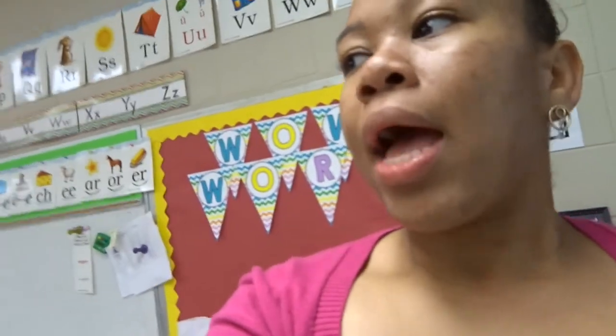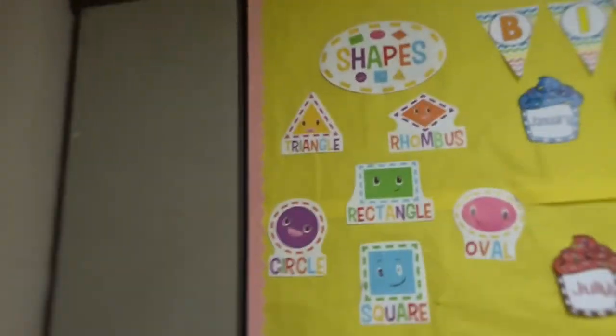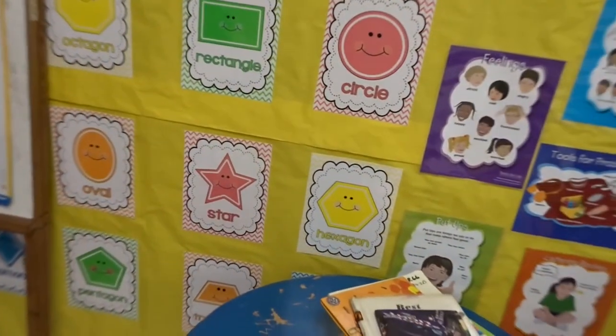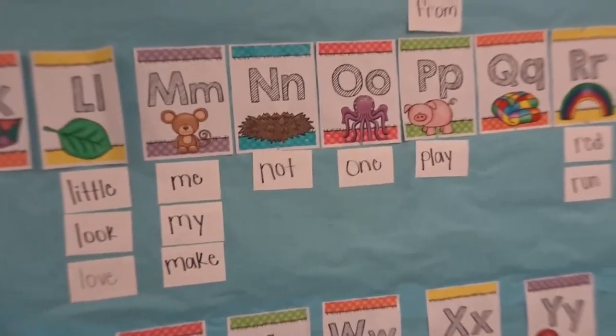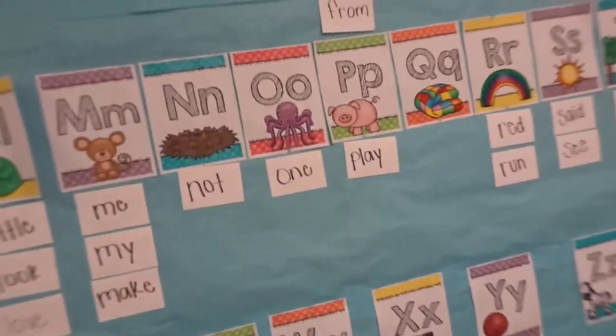This is not your average kindergarten. I know y'all are used to just shapes and colors — which we do have: our shapes, birthday calendar, calm-down center, fine motor skills area, our word wall. Most of the words on the word wall they should have come into kindergarten knowing, and a lot of them didn't, so we go over those and add new words. We still have colors, numbers, days of the week, months of the year — but when you're really talking about reading, literacy, comprehension, and understanding, this is a brand new ball game.